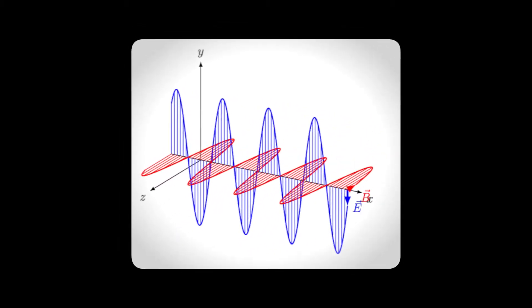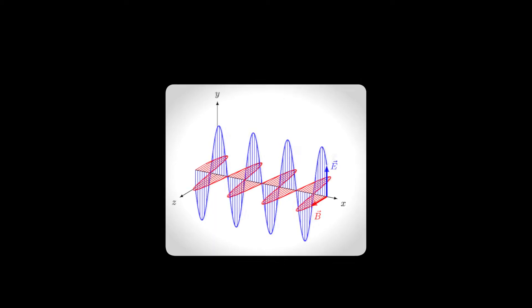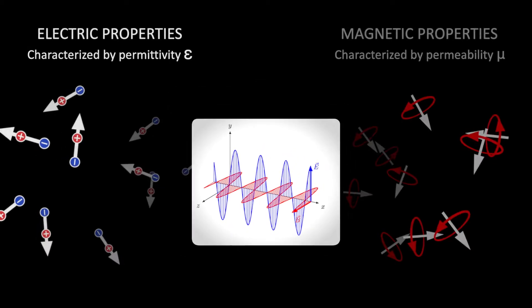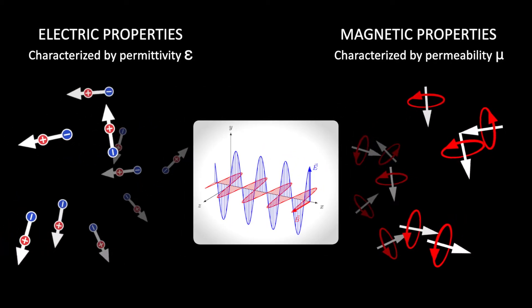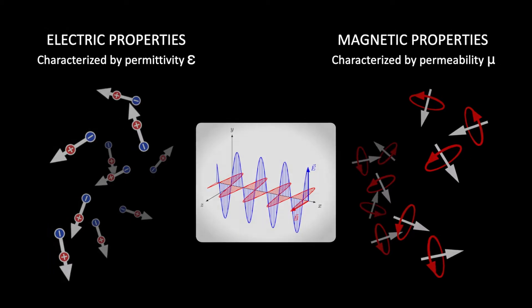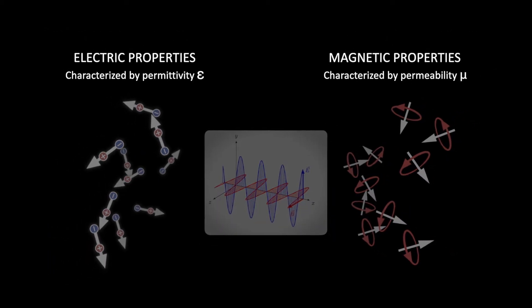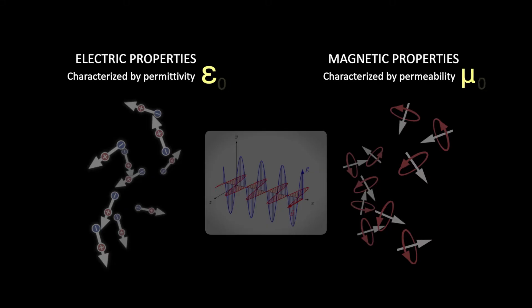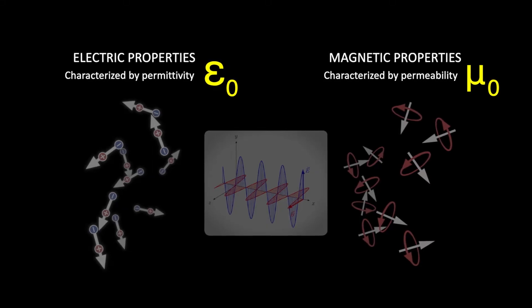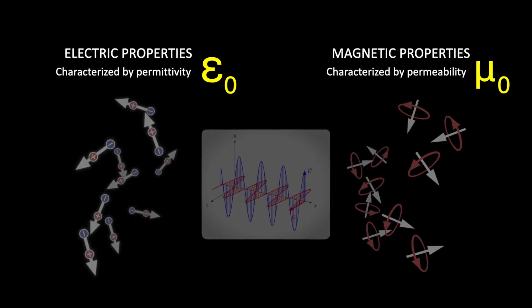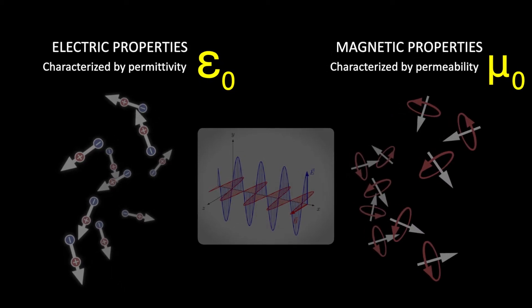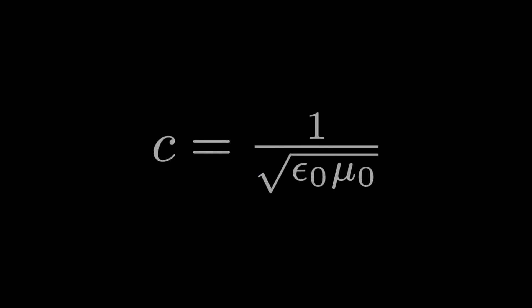Perhaps, then, it is not so surprising that the speed of light in a medium is determined by the electric and magnetic properties of that medium. What may be surprising is that vacuum, which you may think is nothing at all, has electric and magnetic properties like any other medium. More quantitatively, solving Maxwell's equations reveals that the speed at which these waves propagate in vacuum is c equals one over the square root of epsilon-naught mu-naught.